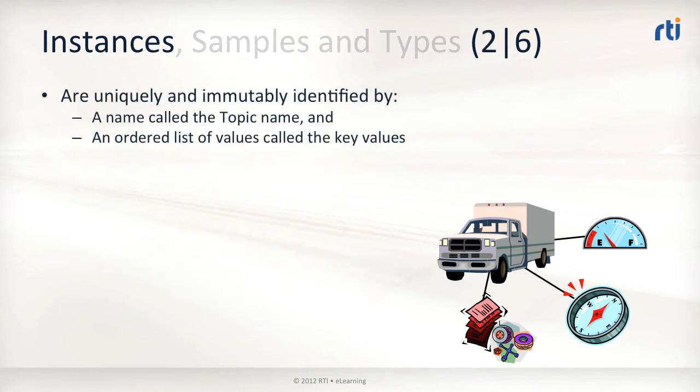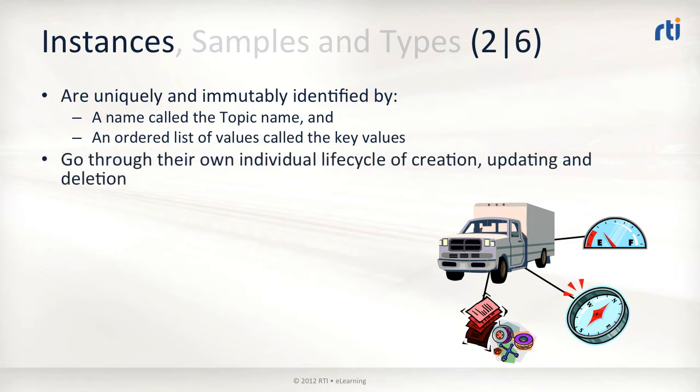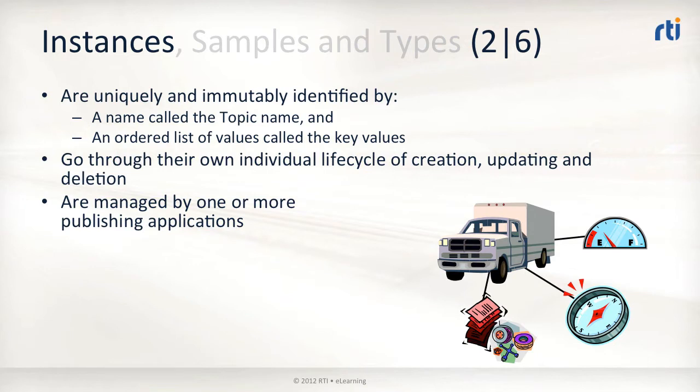Every observable item in DDS is called an instance. In a DDS domain, each instance is uniquely and immutably defined by the combination of a name called the topic name and an ordered list of values called its key values. All instances go through their own life cycle of creation, updating, and deletion. This life cycle is typically managed by exactly one publishing application, although technically it is valid to have multiple publishers updating the same instance as well.